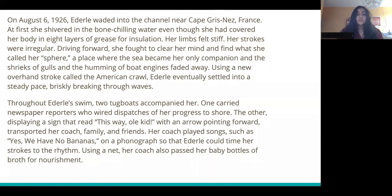Throughout Ederle's swim, two tugboats accompanied her. One carried newspaper reporters who wired dispatches of her progress to shore. The other, displaying a sign that read 'This way, old kid' with an arrow pointing forward, transported her coach, family, and friends. Her coach played songs such as 'Yes, We Have No Bananas' on a phonograph so that Ederle could time her strokes to the rhythm. Using a net, her coach also passed her baby bottles of broth for nourishment.